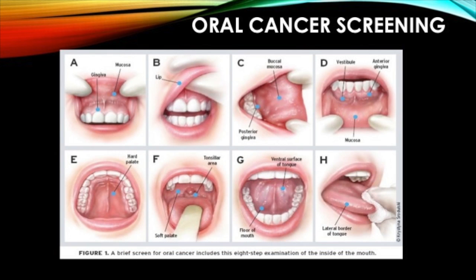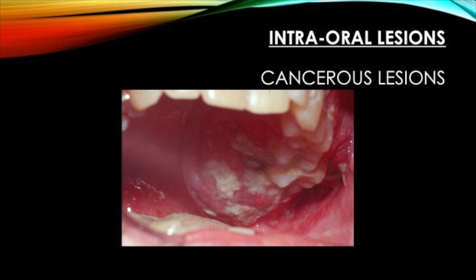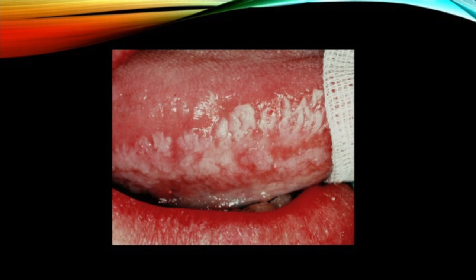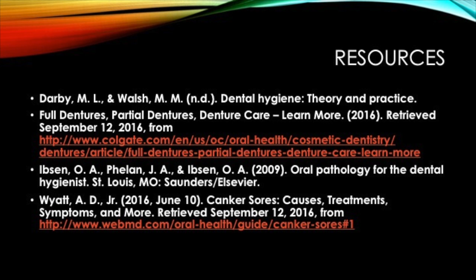This image shows how to give an oral cancer screening. It is important to look at areas in the mouth such as the inside of the upper and lower lips, on the gums around the teeth, on the hard and soft palate, on the floor of the mouth, on the tonsils, and on all areas of the tongue, especially the sides. Here are some images of intraoral cancerous lesions and different locations where you might find them. These are what you would be looking for when doing an oral cancer screening. Thank you for your time. We hope you learned more about the oral structures, denture care, and intra- and extraoral cancerous lesions. Our goal is that you feel more comfortable identifying healthy versus non-healthy structures of the mouth.